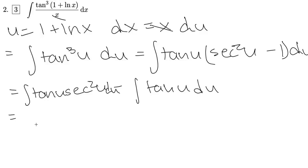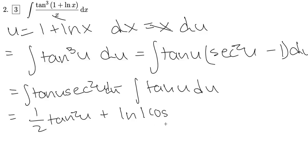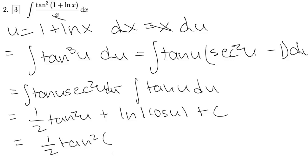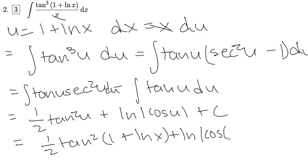So this is going to be equal to 1 by 2 tan squared u plus the natural log of the mod of cos u plus c, which is equal to 1 by 2 tan squared of 1 plus the natural log of x plus the natural log of cos of 1 plus the natural log of x plus c.